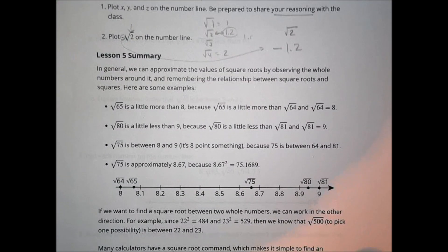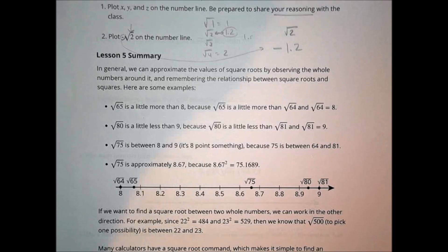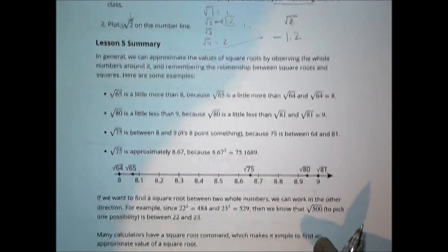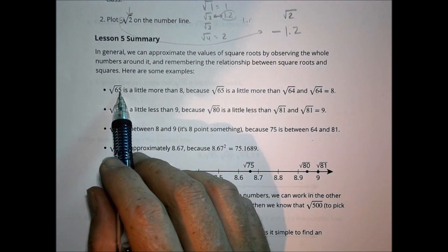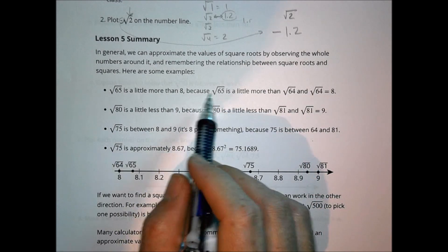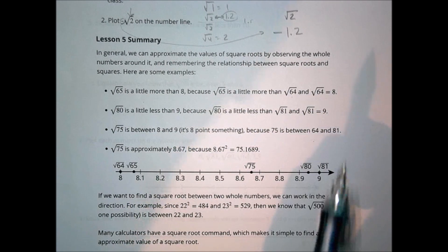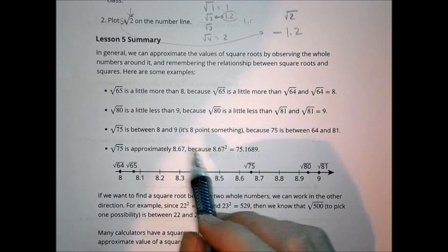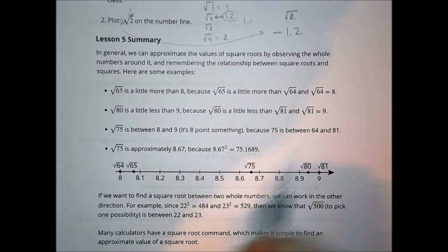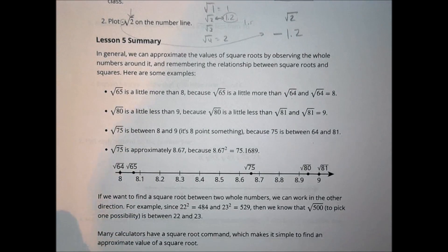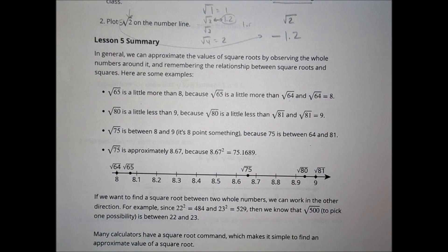In summary, we can approximate the values of square roots by observing the whole numbers around them and remembering the relationships between square roots and squares. For example, the square root of 65 is a little more than 8 because 65 is a little more than 64, and the square root of 64 is 8. That's today's lesson — pause, work on your homework, then come back and press play to see how you did.